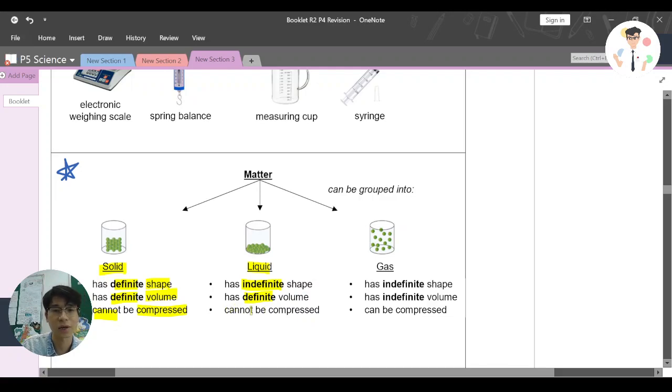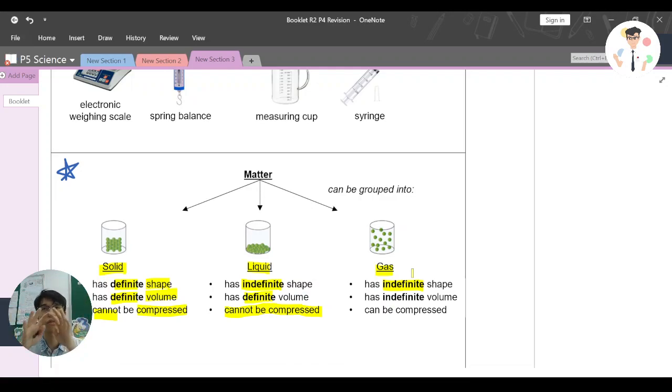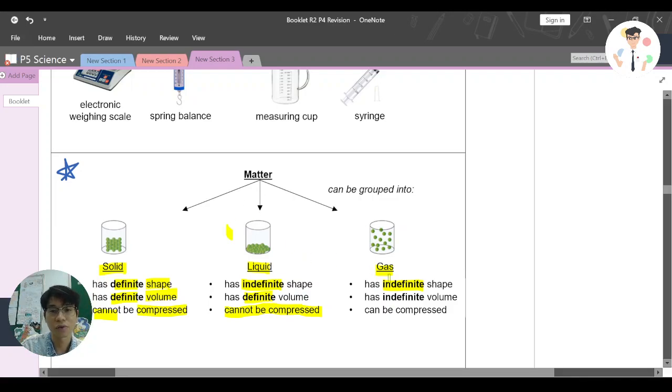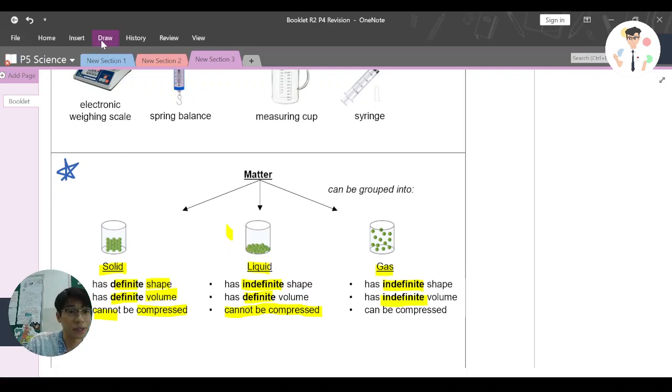Last, we have gas. This gas has indefinite shape, means that you don't have an exact shape. For example, when you blow the balloon, it depends on the balloon size. It depends on the shape of the balloon. If you have a love shape, it becomes love shape. It also has indefinite volume, which is something that's interesting.